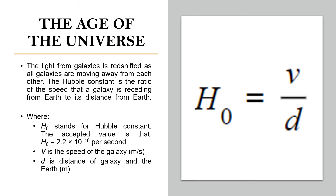The speed of a galaxy depends on its distance from the Earth. The light from galaxies is redshifted because all galaxies are moving away from each other. If we plot a graph of speed at which galaxies are moving away from the Earth against the distance of the galaxies from Earth, we find that speed and distance are proportional — the further away a galaxy is, the faster it moves away from us. The Hubble constant is equal to the speed of a galaxy divided by the distance of the galaxy from Earth. We measure speed in meters per second and distance in meters. A current estimate for the Hubble constant is approximately 2.2 × 10⁻¹⁸ per second.